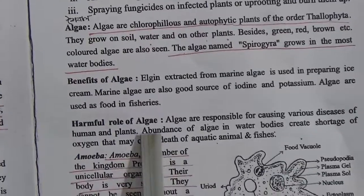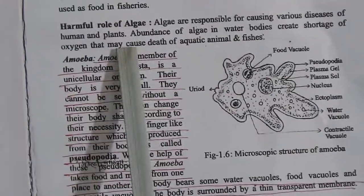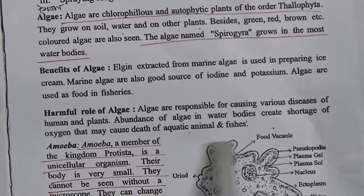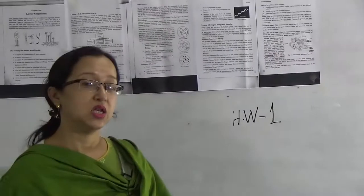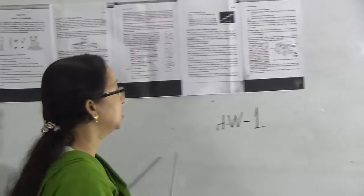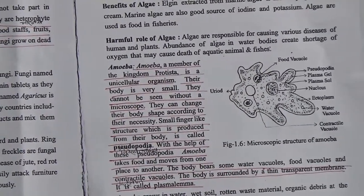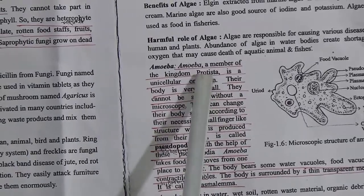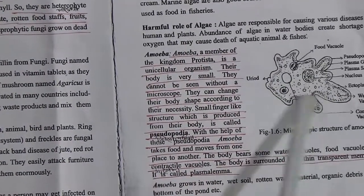Harmful role of algae: algae are responsible for causing various diseases of humans and plants. Abundance of algae in water bodies creates a shortage of oxygen, which may cause the death of aquatic animals and species. When algae are short in number in ponds or other water spaces, plants and animals will also die due to shortage of oxygen.